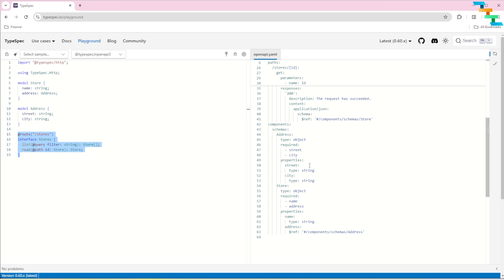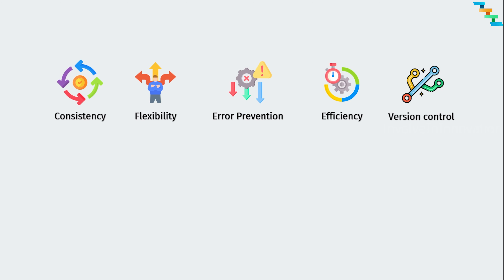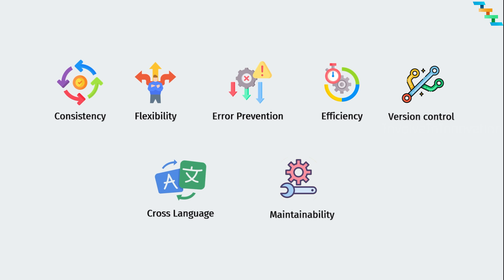This will become a real big bottleneck if your team is trying to move from one technology to another. TypeSpec solves several things: consistency — it standardizes API design across teams and services, preventing inconsistency; flexibility — it separates API design from implementation, making it adaptable to multiple protocols like REST, gRPC, etc.; error prevention — enforces strong typing to catch design errors early; and efficiency — automates generation of documentation, clients, and server stubs, reducing a lot of manual work.